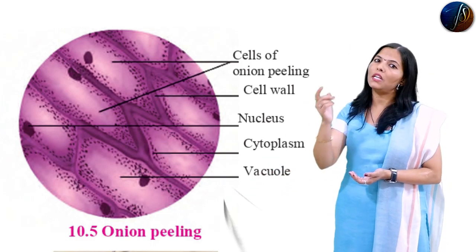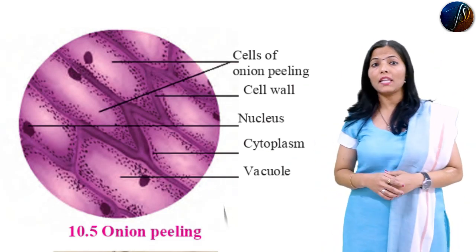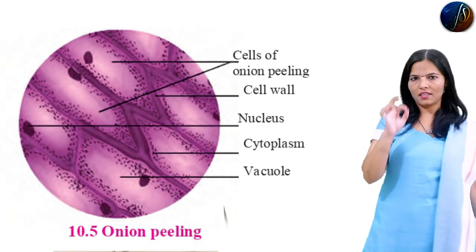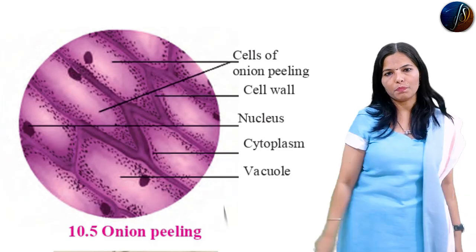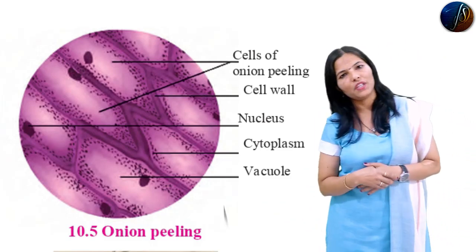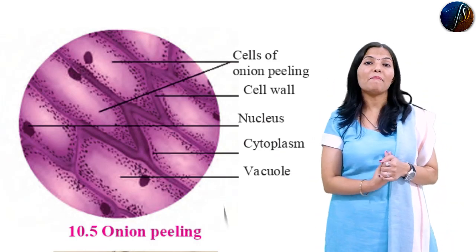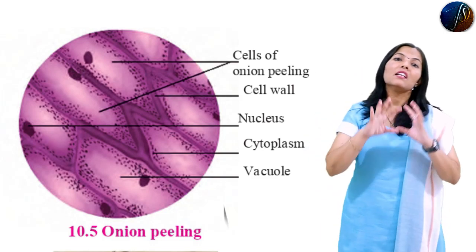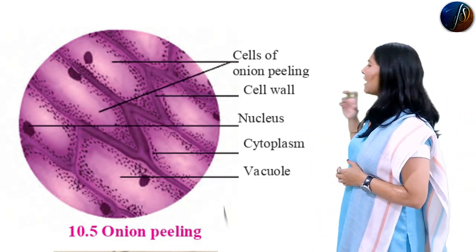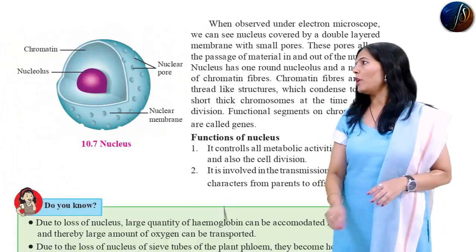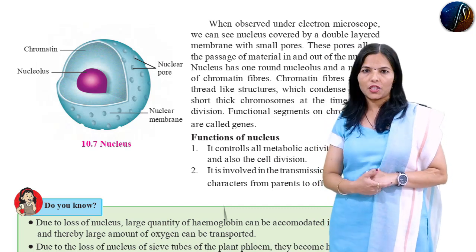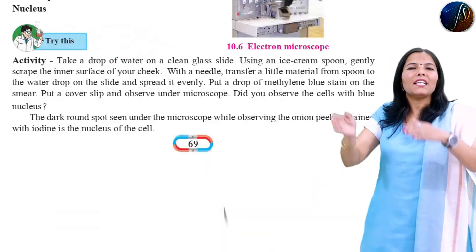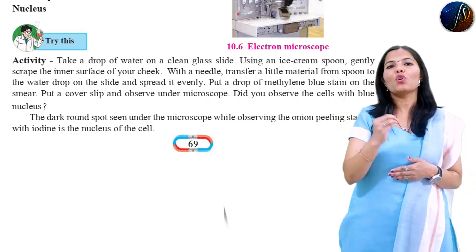If you observe the plant cell under the microscope, you will see the cell wall, nucleus, and cytoplasm. This is what the onion peeling experiment shows. In the cell organelles, the nucleus is the brain - it is the most important organelle controlling the cell. The nucleus is the largest cell organelle in every cell. When observed under the electron microscope, we can see the nucleus covered by a double layer membrane with small pores called nuclear pores.